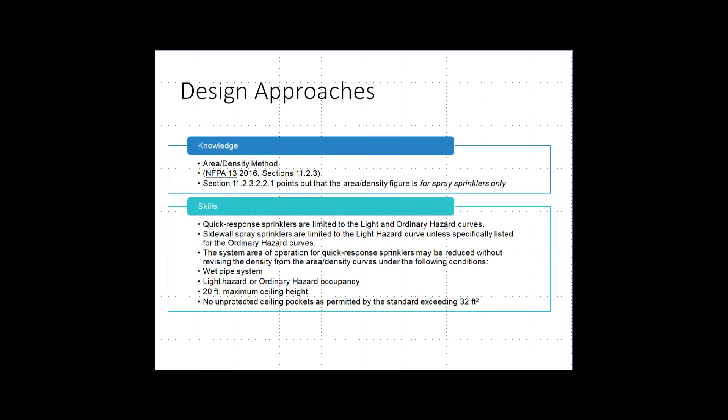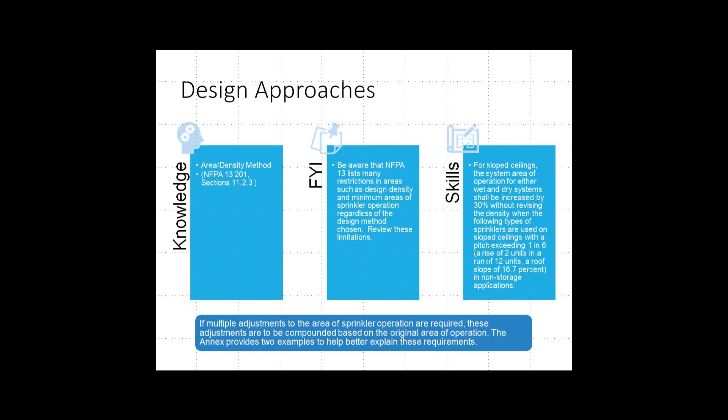Section 11.2.3.2.2.2.2.1 applies to spray sprinklers only. Remember to increase the area of operation 30% for dry systems and 30% for slopes exceeding 1 in 6 units, or 16.7% in non-storage applications.